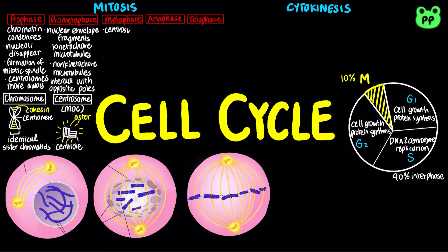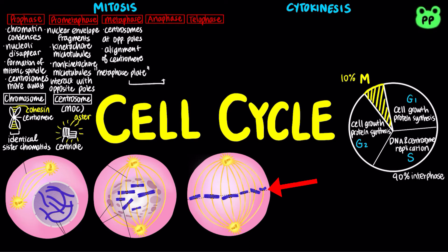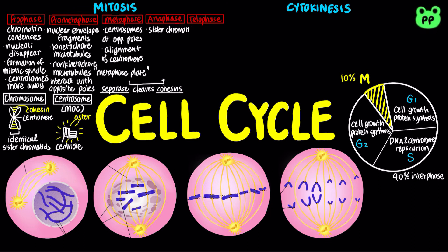During metaphase, the centrosomes are now at opposite poles of the cell. The centromeres of each chromosome align at the middle of the cell, forming the metaphase plate. Towards the end of metaphase and the beginning of anaphase, an enzyme known as separase cleaves cohesin proteins, separating the two identical sister chromatids from each other. Each chromatid becomes a full-fledged chromosome, which begins to move toward opposite ends of the cell as their kinetochore microtubules shorten.